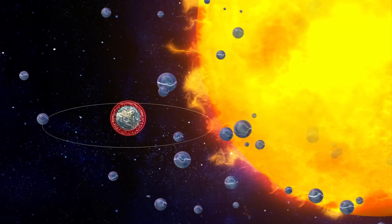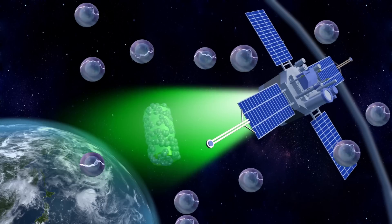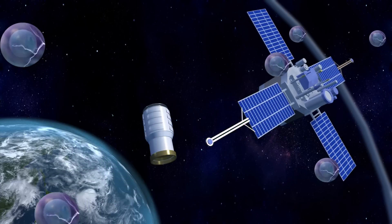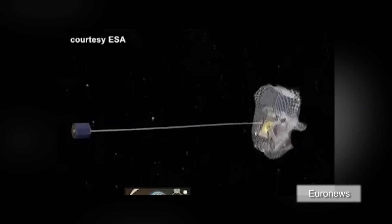The method would not work on objects in a low Earth orbit, as the space junk would quickly attract charged plasma particles from the Sun and become neutral. Low Earth orbit space junk could be cleared using other methods.